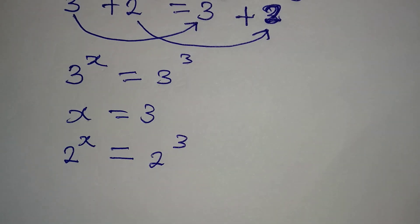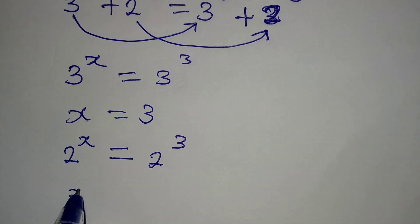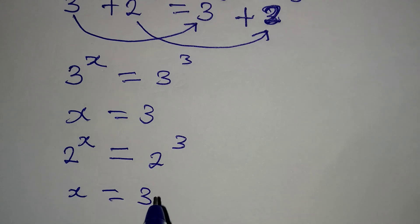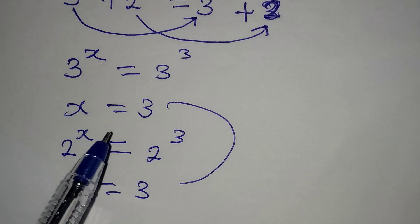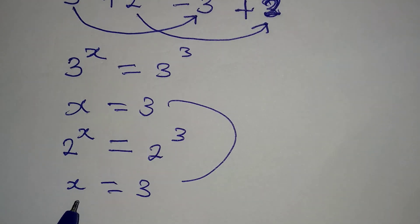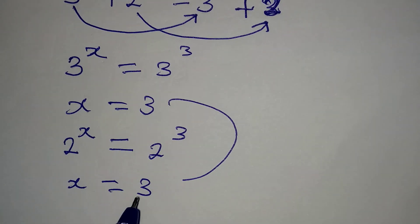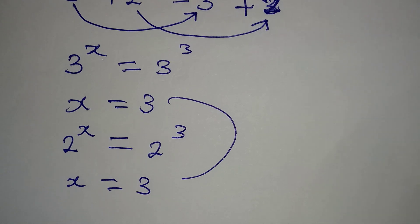According to the first, x = 3, and according to the second, x is also equal to 3. Let's go back to the original equation and verify.